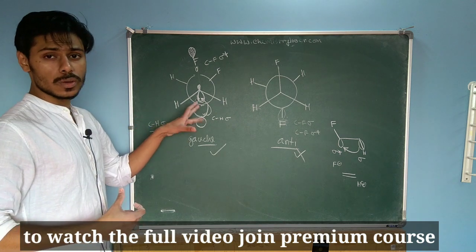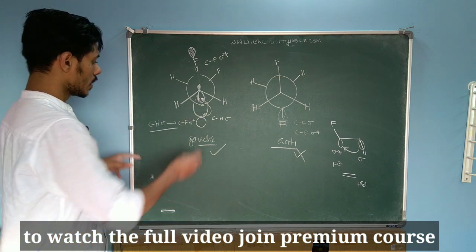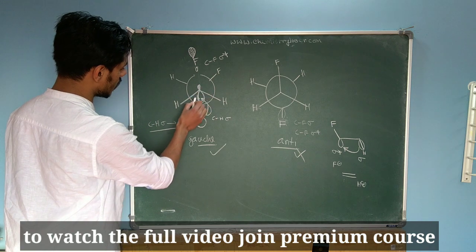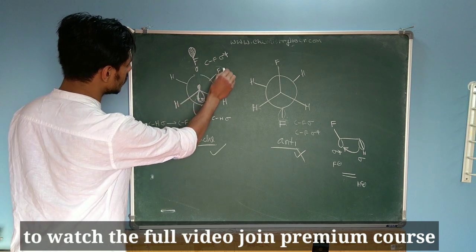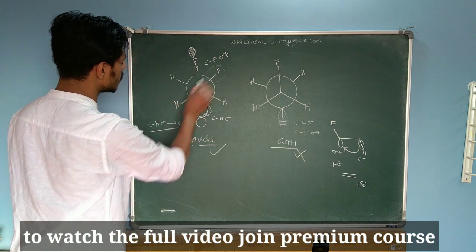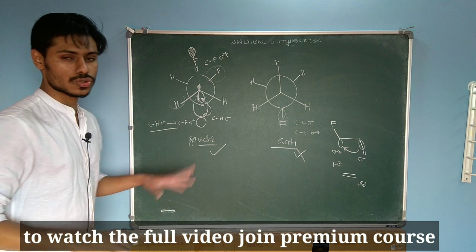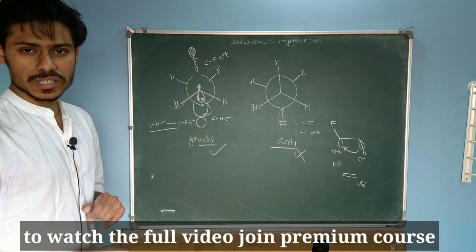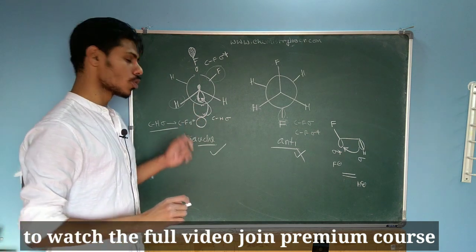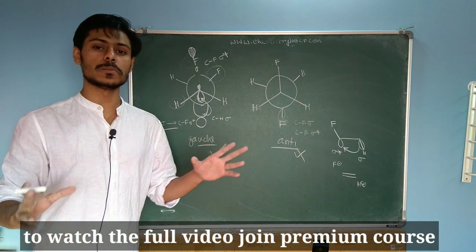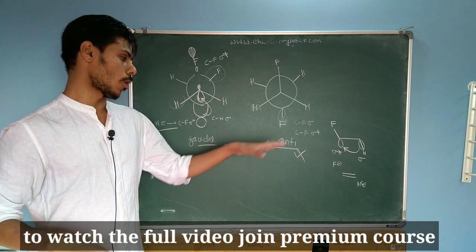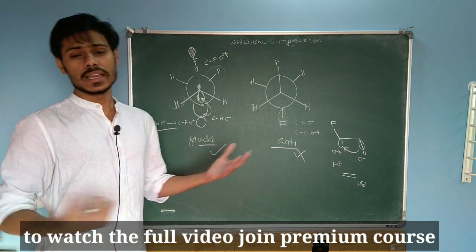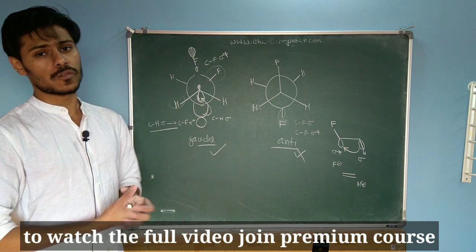This is not only one way — another such interaction is possible between the CF sigma star and the CH sigma on the other side. So two sigma to sigma star interactions are present in the gauche form, which makes the gauche form stable compared to the anti form.